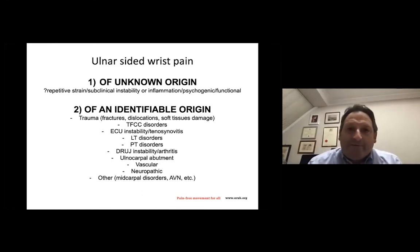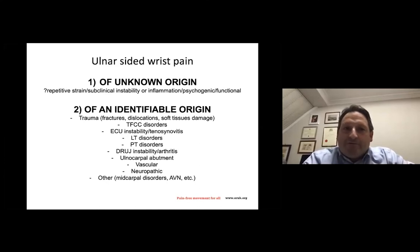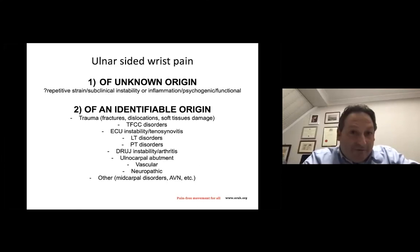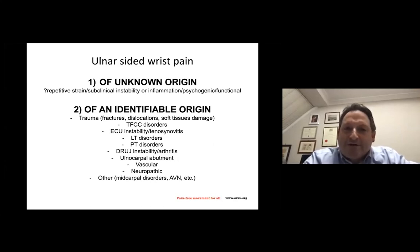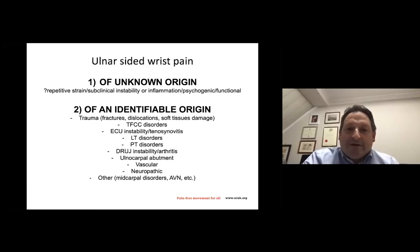Other types of pain are associated with identifiable origin — cases of trauma, fractures, dislocation, and sources of tissue damage in general. TFCC disorders affecting the specific portion of the wrist, ECU instability and tenosynovitis, disorders of the lunotriquetral ligament, of the pisotriquetral joint, instability and arthritis of the DRUJ, ulnocarpal abutment, vascular, neuropathic, and other disorders.